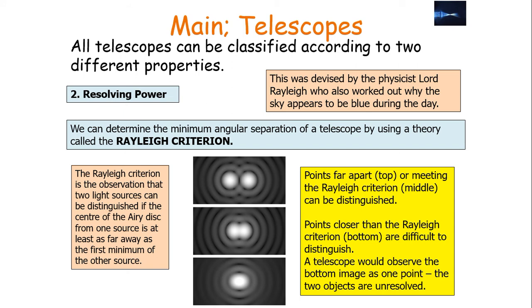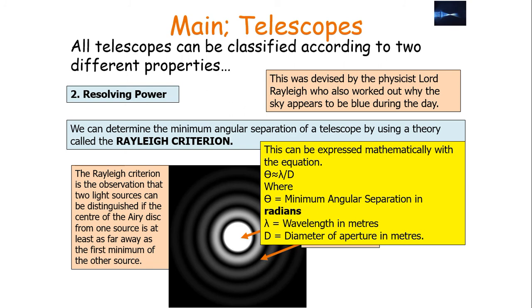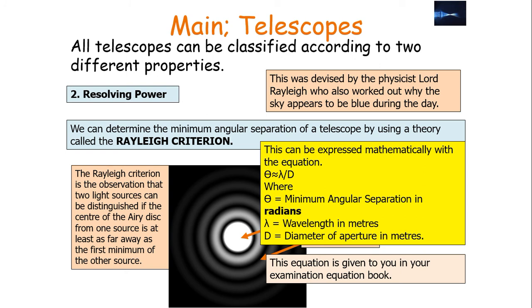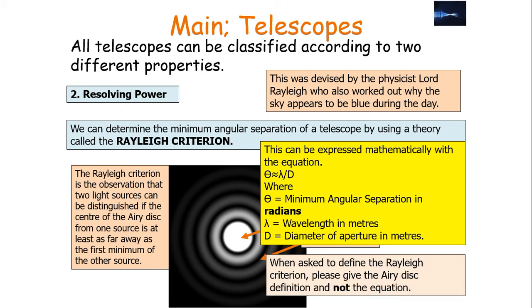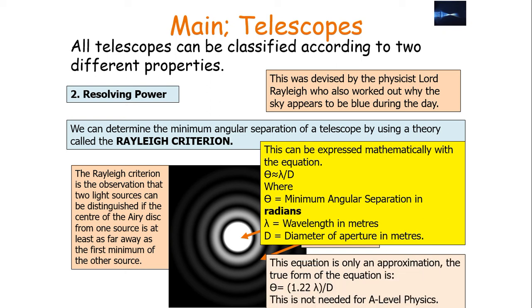A telescope would observe unresolved objects as one point. The Rayleigh criterion can be expressed mathematically: the minimum angular separation theta (in radians) is approximately equal to the wavelength in metres divided by the diameter of the aperture in metres (θ ≈ λ/d). This equation is provided in your examination equation book — you only need to use it, not memorise it. When asked to define the Rayleigh criterion, give the airy disk definition rather than the equation. The true form of the equation is θ = 1.22λ/d but this is not required for A-level physics.